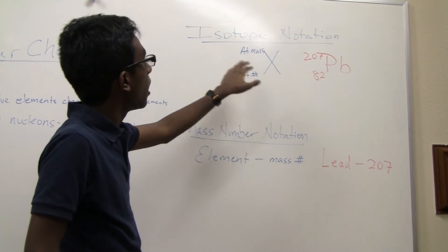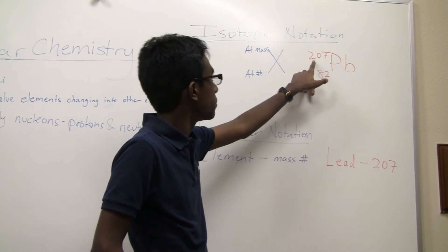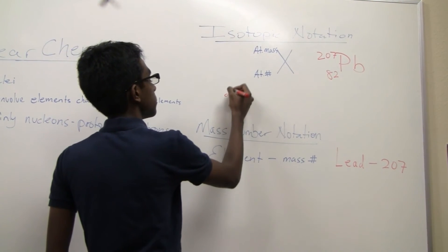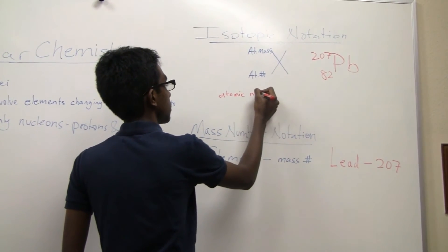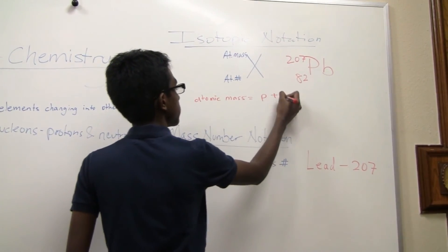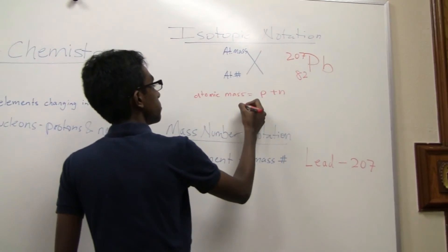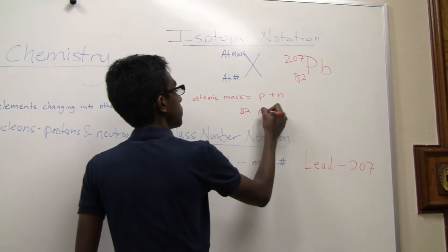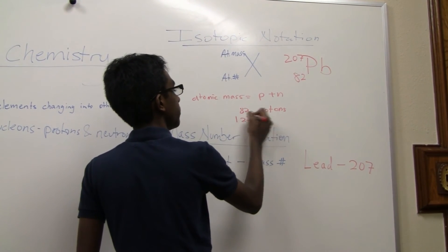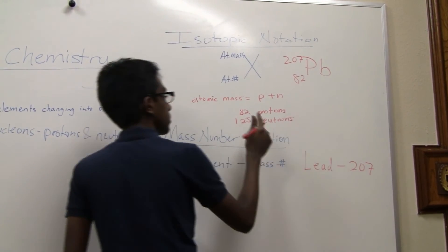So in this case, this isotope has an atomic mass of 207. Remember that atomic mass equals the number of protons plus the number of neutrons. So in this case, for lead, you're going to have 82 protons, and then you're going to have 125 neutrons. Alright?